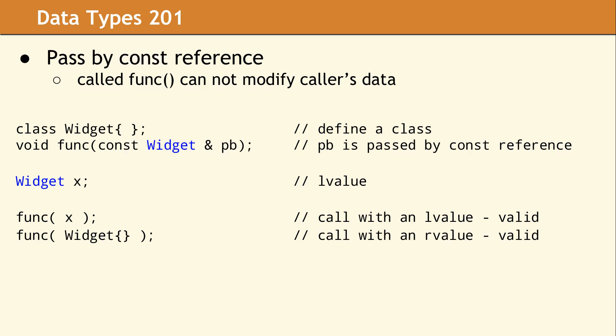If we change func again to receive its parameter by const reference, the intention is that the called function cannot modify the data. So in this case, calling with an L value or an R value is valid because there will be no changes that we have to be concerned about visibility of. The function will not change its passed parameter.